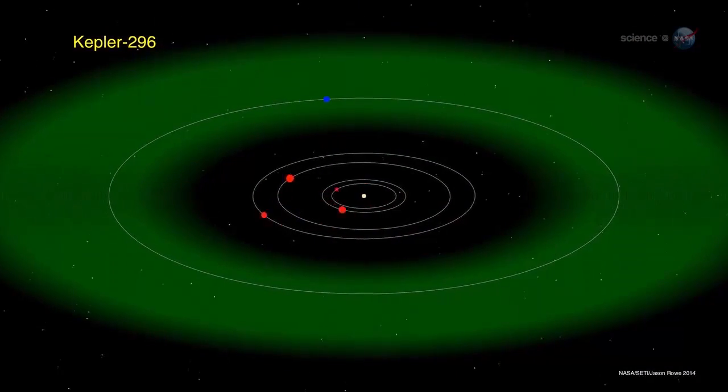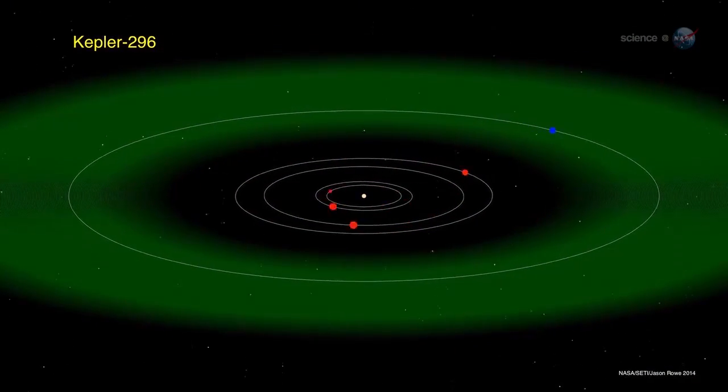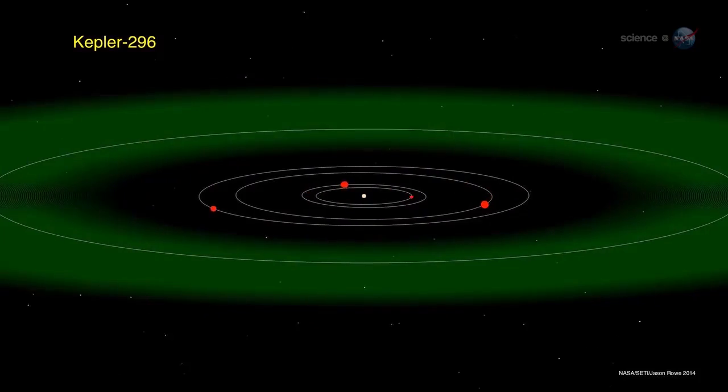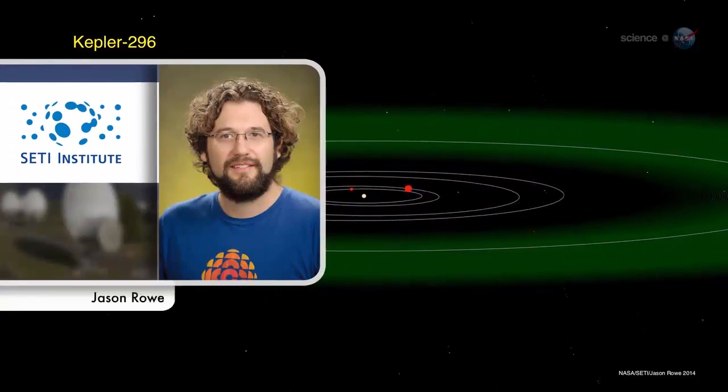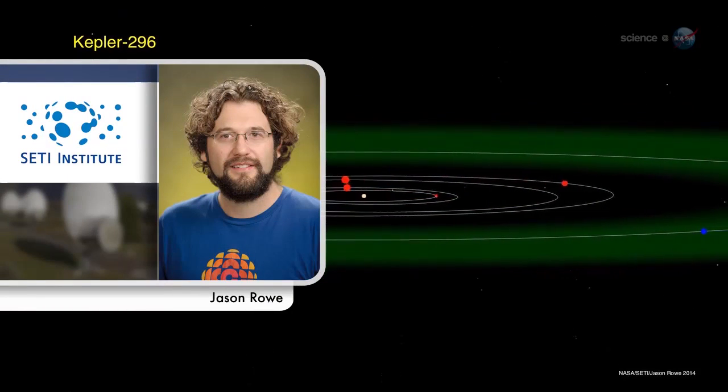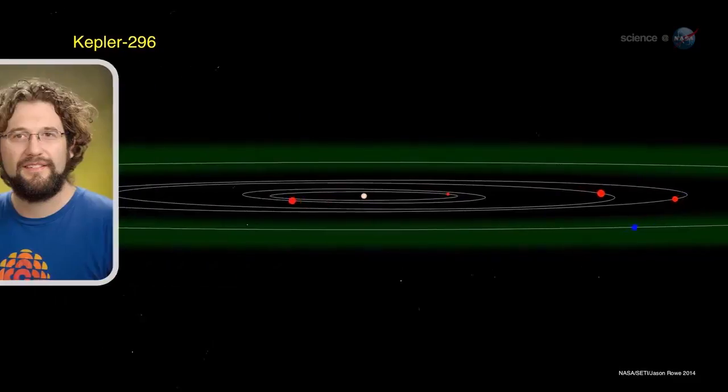This study shows us that planets in multi-systems tend to be small and their orbits are flat and circular, much like the inner parts of our own solar system, says Jason Rowe, a co-leader of the research at the SETI Institute.